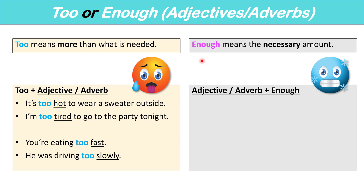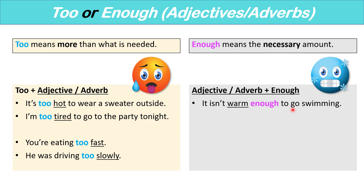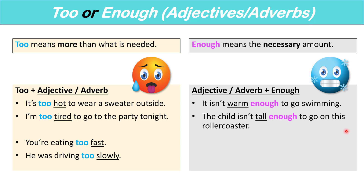With 'enough,' we put it after an adjective or adverb. For example: it isn't warm enough to go swimming; the child isn't tall enough to go on the roller coaster; you're not walking fast enough.